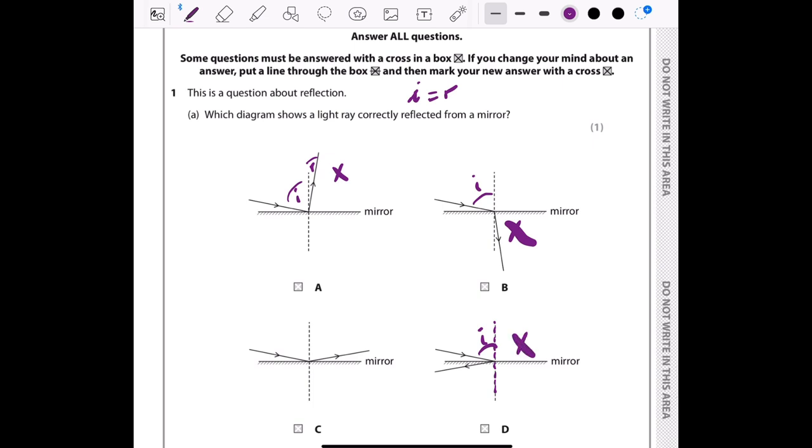For C, here is the angle of incidence between the incident or incoming ray which strikes the mirror and the normal. And here we have the outgoing light ray, which is the reflected ray, and this is the angle of reflection. Here we have i equals r, so the correct answer is C.